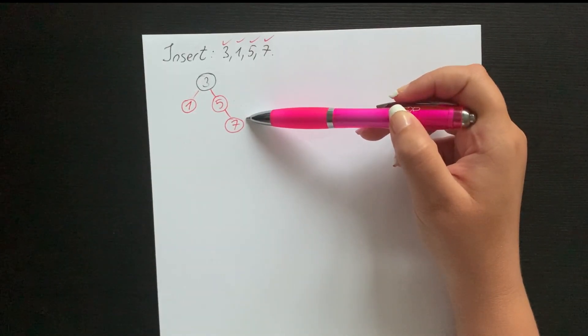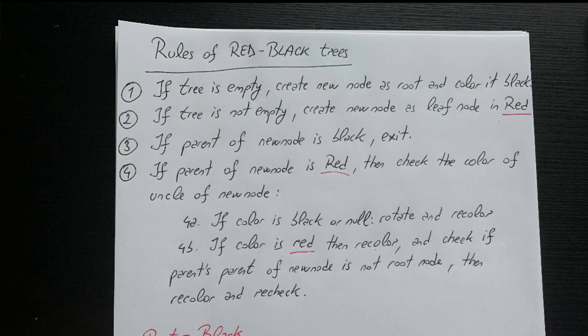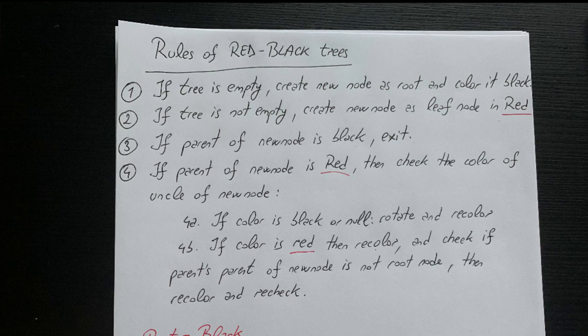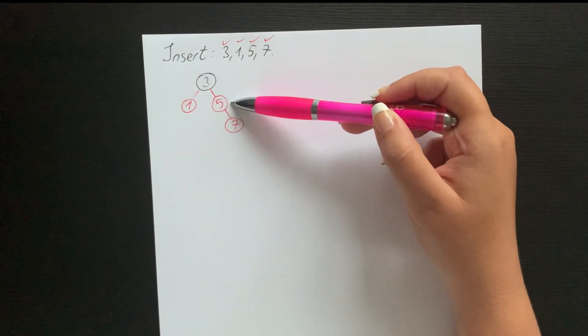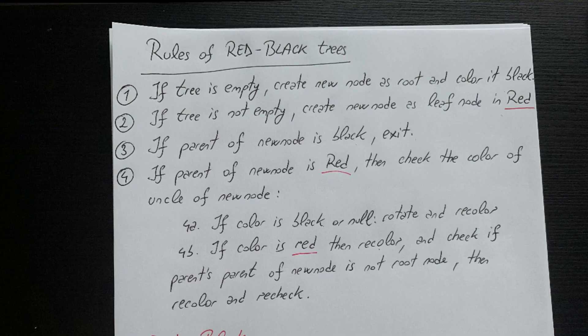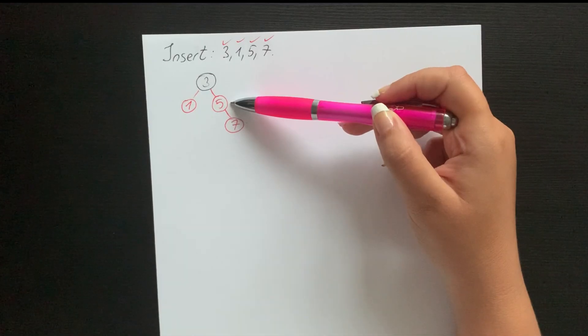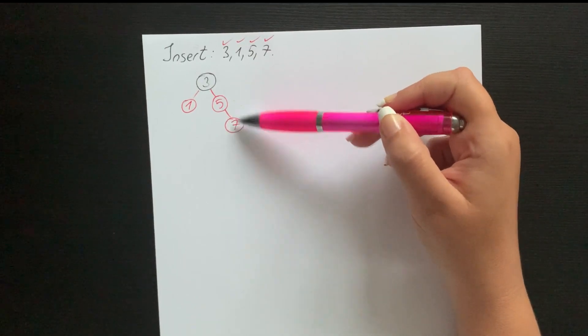Okay now we see that we have a violation here because in the red black tree we cannot have two adjacent red nodes. So what we do now is look at rule number four: if parent of new node is red, which it is - the parent of seven which is our new node is five and is red - then check the color of uncle of new node. We have seven as new node, the parent of seven is five, and the uncle of seven is one.